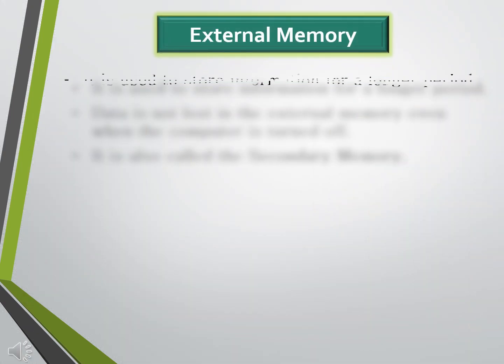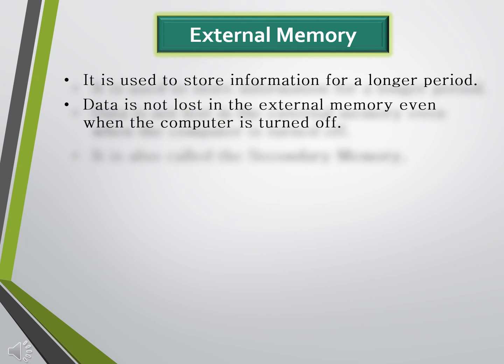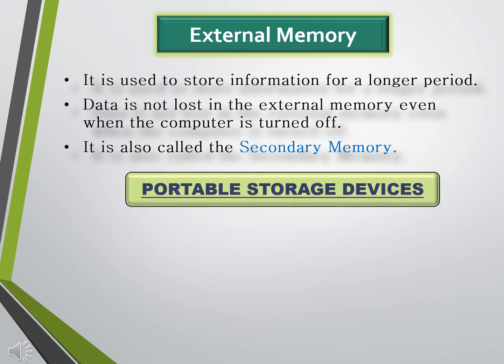What is external memory? In this memory, we can store information for a longer period of time. Data is not lost in external memory even when the computer is turned off. External memory is essential for a computer because the internal memory has a limited storage capacity. Therefore, it is also known as secondary memory.